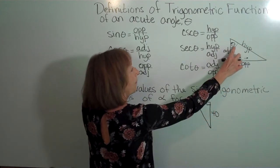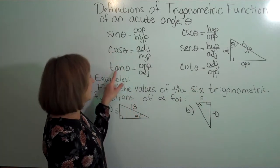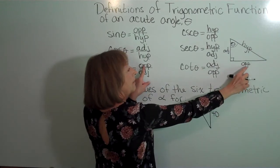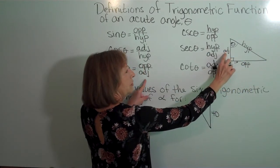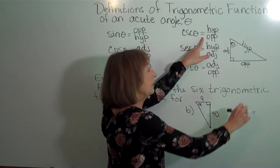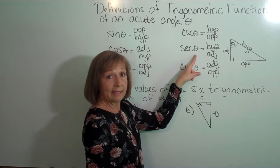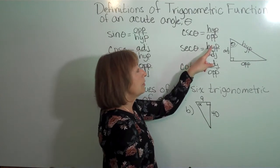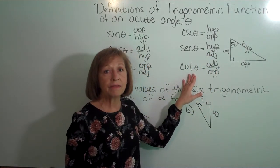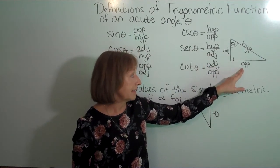The cosine of the angle is equal to the length of the adjacent side divided by the hypotenuse. The tangent of the acute angle is defined to be the ratio of the length of the opposite side divided by the adjacent side. The cosecant of the angle is equal to the ratio of the hypotenuse divided by the opposite side. The secant of the angle is defined to equal the ratio of the hypotenuse divided by the adjacent side. And the cotangent of the angle is equal to the adjacent side length divided by the opposite side.